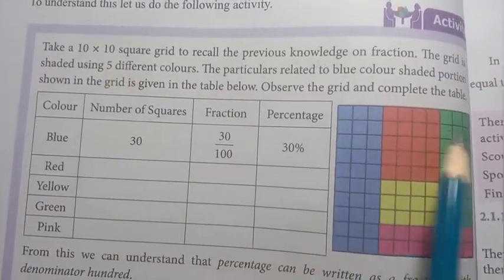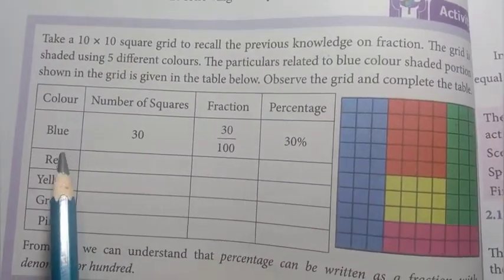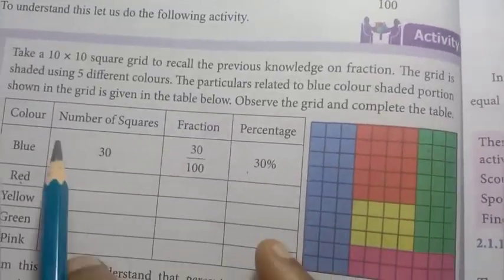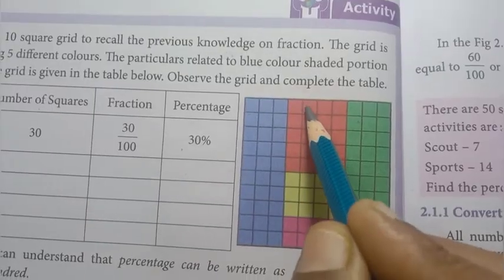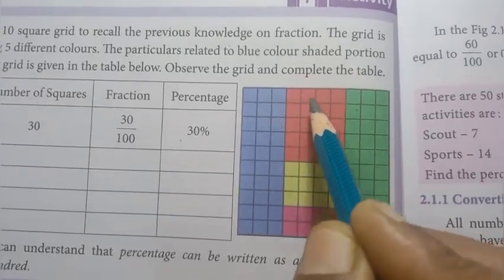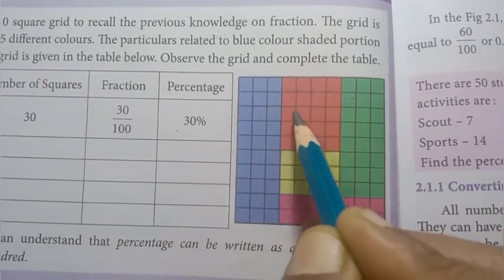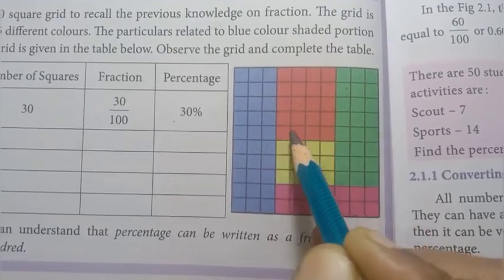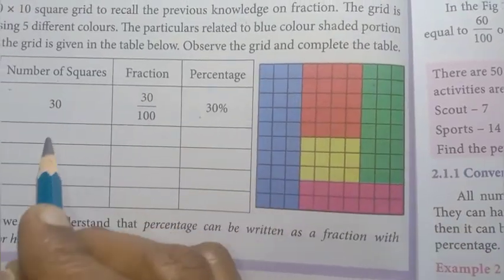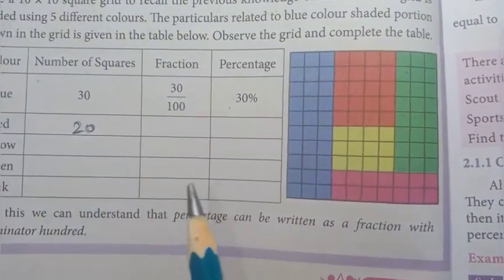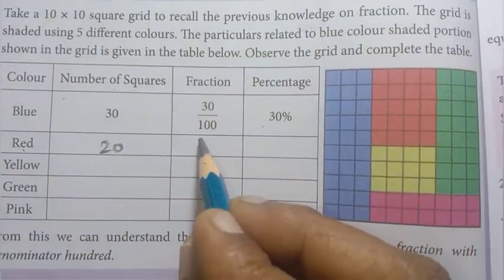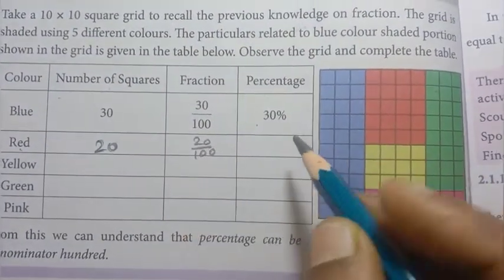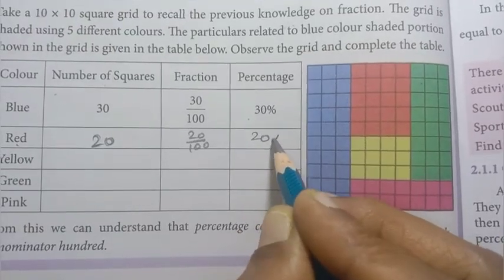Here is a 10x10 square grid. The blue color squares — counting them: 1, 2, 3, 4, 5, 6, 7, 8, 9, 10, 11, 12, 13, 14, 15, 16, 17, 18, 19, 20. So the number of blue squares is 20. As a fraction: 20 by 100, so 20 percentage.